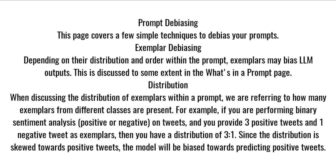When discussing the distribution of exemplars within a prompt, we are referring to how many exemplars from different classes are present. For example, if you are performing binary sentiment analysis — positive or negative — on tweets, and you provide 3 positive tweets and 1 negative tweet as exemplars, then you have a distribution of 3:1. Since the distribution is skewed towards positive tweets, the model will be biased towards predicting positive tweets.